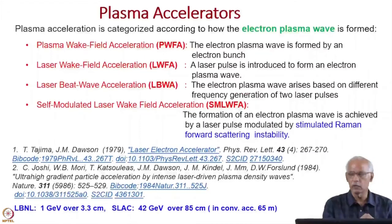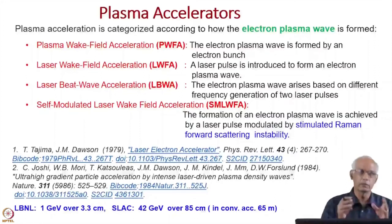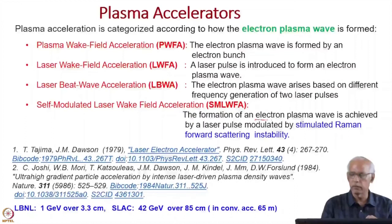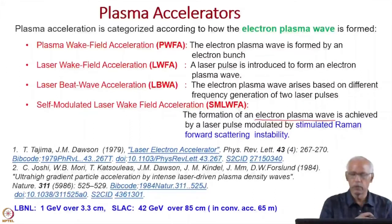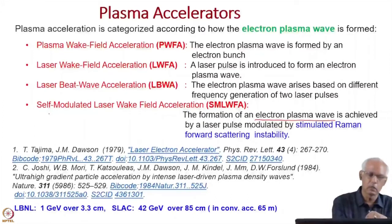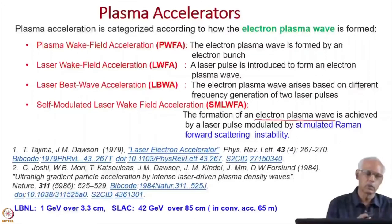In laser beat wave acceleration, the electron plasma wave arises from the beat frequency of two laser pulses — two lasers are required. There is another category that is even more efficient, where the formation of the electron plasma wave is achieved by a laser pulse modulated by a stimulated Raman forward scattering instability. Much higher gradients are possible here, and these are called self-modulated laser wakefield acceleration.